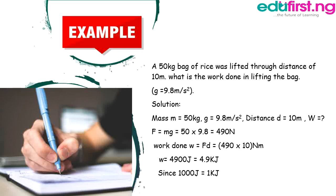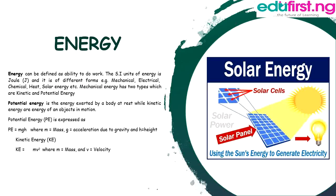4900 Joules can also be converted to 4.9 kilojoules, since 1000 Joules equals 1 kilojoule. Moving on to energy: energy can be defined as the ability to do work. The SI unit of energy is also the Joule. Energy exists in different forms — mechanical, electrical, chemical, heat, solar energy, etc.